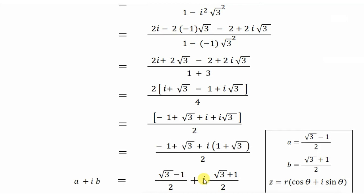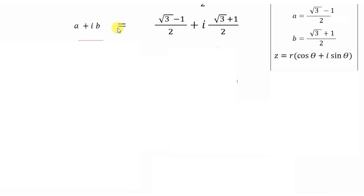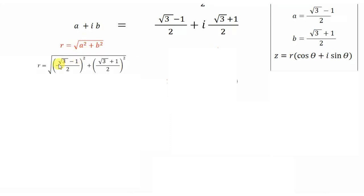Now that we have converted it into standard form, the next step is to convert it into polar form: Z = R cos θ + i sin θ. For that we need the value of R and θ. This is the standard form of the given complex number, and to find R we have the formula R = √(a² + b²).